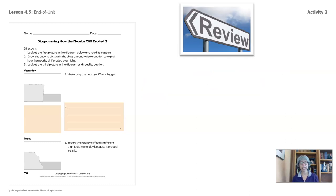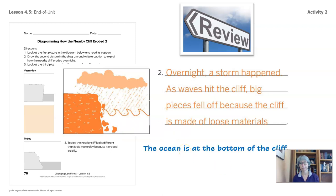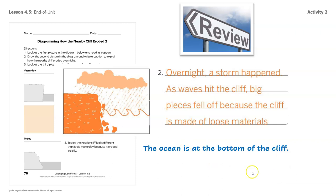All right, welcome back. Let's review. Some of you drew the cliff as big pieces of rock were coming off. And this happened overnight because some of you thought that a storm came through, and others of you drew rain coming in and gusts of wind and big waves crashing. You included the ocean is at the bottom of the cliff and that's where the waves came from, and that the cliff is made of loose soil, and that's where these big pieces of rock have fallen from.